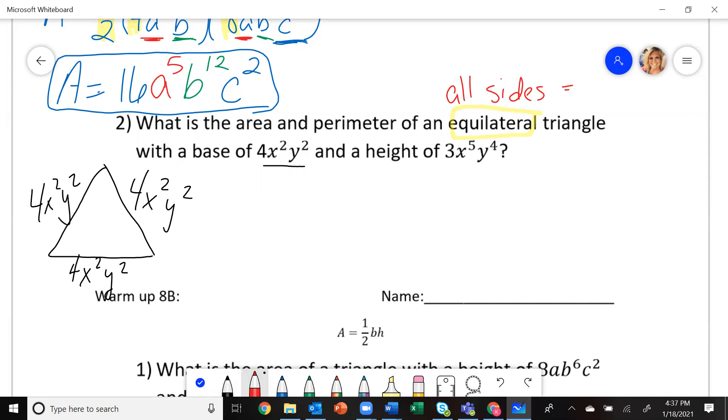Now, it says it has a height, and that means here in the middle, the height is going to be 3X to the 5th, Y to the 4th.